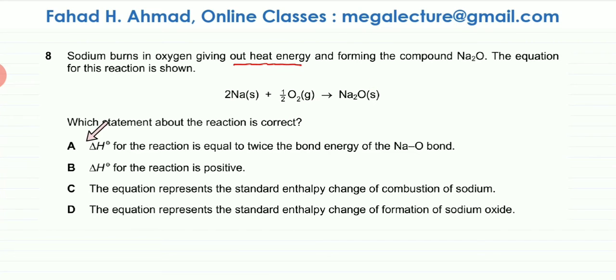The first statement, if you look at the first statement, that is enthalpy change for the reaction is equal to twice the bond energy of the Na-O bond. Now one thing wrong with that is that I don't think Na and O are forming a covalent bond. They're forming an ionic bond. Na is plus one, O is minus two. So to write it like this would not be the correct way.